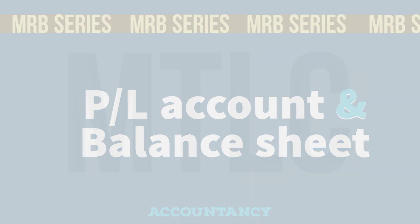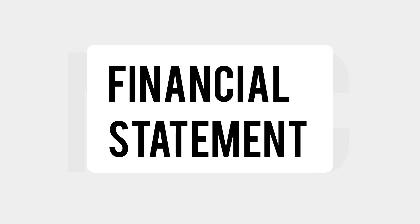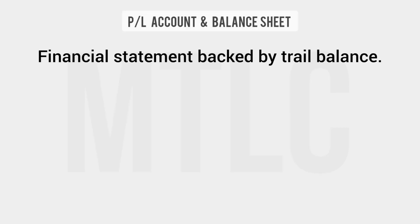A financial statement — we have seen a trial balance in the last class. We have a cash book, a ledger, and a trial balance. From that trial balance, we prepare a financial statement, which is the Profit and Loss Account and Balance Sheet.